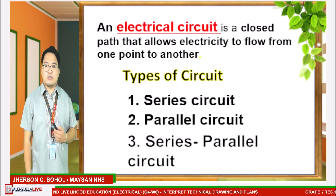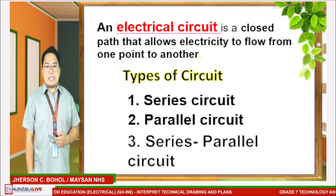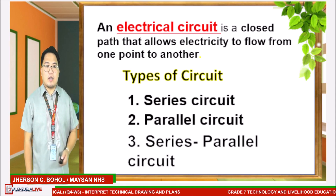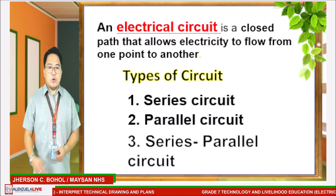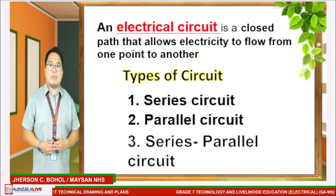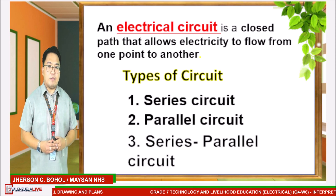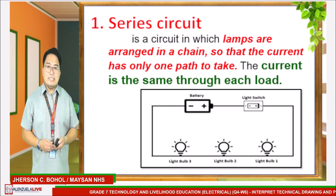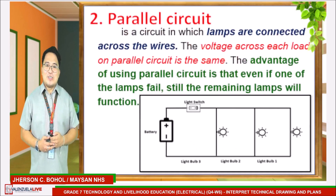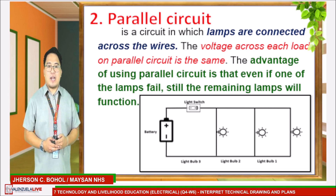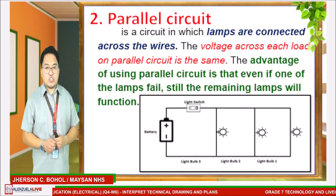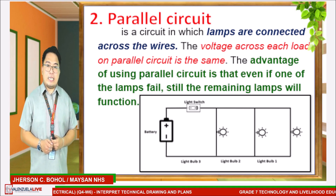Take note of that. A series circuit is a circuit in which lamps are arranged in a chain, so that the current has only one path to take. The current is the same through each load. The second type of circuit is the parallel circuit. A parallel circuit is a circuit in which lamps are connected across wires. The voltage across each load on a parallel circuit is the same.